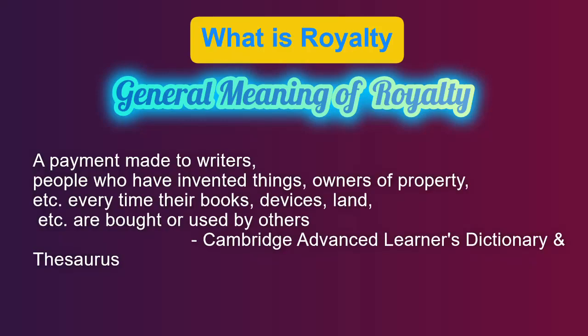Cambridge Dictionary के अनुसार, royalties are payments made to people who have invented things, owners of property, etc., every time their books, devices, land, etc. are bought or used by others. यह royalty है, यह payment royalty है।